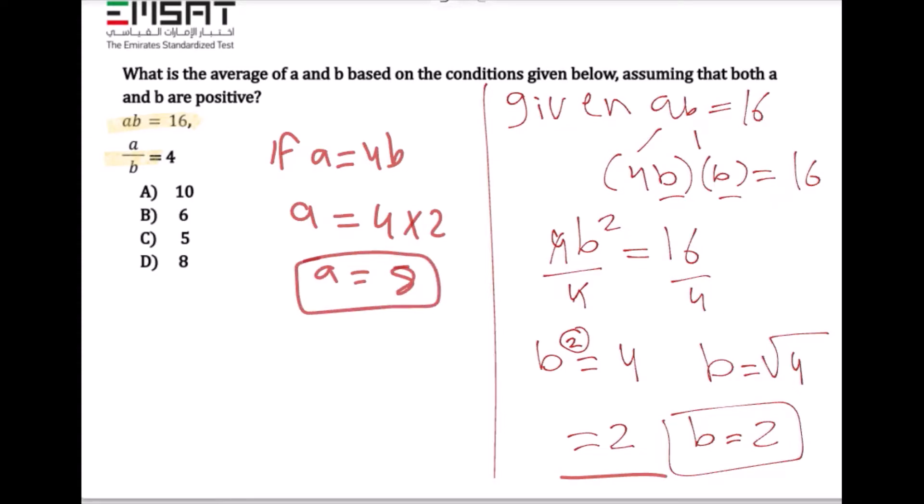The average of a and b equals a plus b over 2. That's 8 plus 2 over 2, which equals 10 over 2. 10 over 2 equals 5, so the answer to this question is 5, which matches option C.